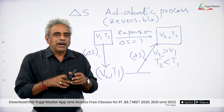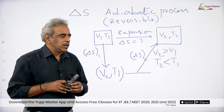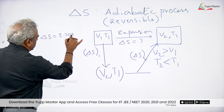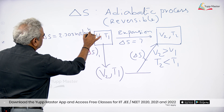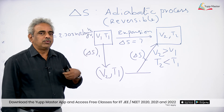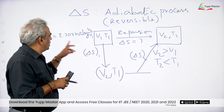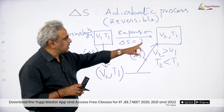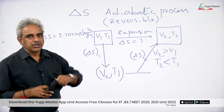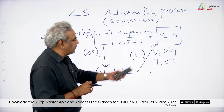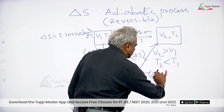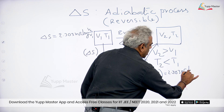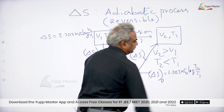For the isothermal step, entropy change is ΔS = 2.303·nR·log(V2/V1), which is the expression we know for an isothermal change when temperature is constant. In the second step, volume remains constant and only temperature changes, so for the isochoric step: ΔS = 2.303·nCv·log(T_final/T_initial).